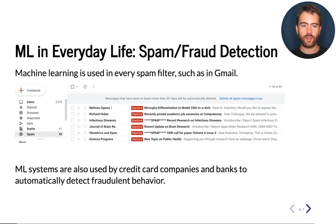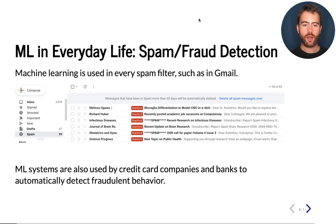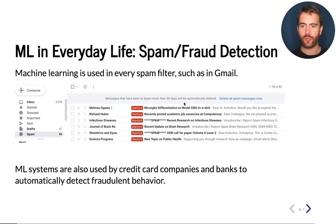If you used email today, then again you relied on machine learning for spam filtering. This is an example of my own spam folder. I didn't have to manually triage all these relevant emails because a machine learning algorithm was able to do this automatically for me. Furthermore, machine learning systems are used by credit card companies and banks to detect various forms of fraudulent behavior. And if you didn't have any fraudulent behavior on your credit card account, then that is also in large part due to the existence of intelligent machine learning algorithms.